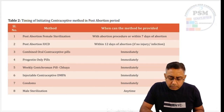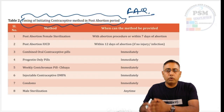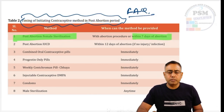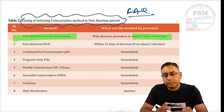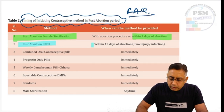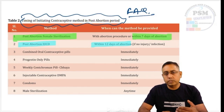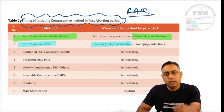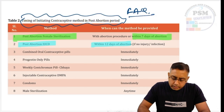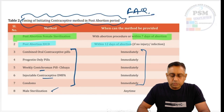Timing of initiating contraception is a frequently asked question. Post-abortion female sterilization can be done within seven days of abortion — along with the abortion procedure or up to seven days after. Post-abortion IUCD can be inserted within 12 days of abortion. After delivery, PPIUCD should be inserted within 24 hours; if not, it should be delayed until after six weeks. Other contraceptions — oral contraceptive pills, progesterone-only pills, centchroman, injectables, condoms — can be started immediately after abortion, and vasectomy can be done anytime.